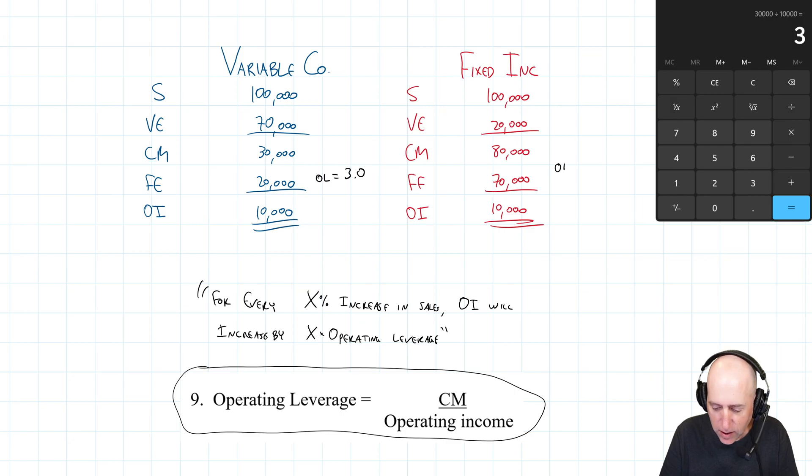So again, 30 divided by 10, I think we can all do the math in our head. It's three, 3.0. And that's just a number. It's not a percentage or dollar amount. That's just a number. And for fixed Inc, their operating leverage CM 80 divided by 10, you can see it's eight. So it has higher operating leverage.